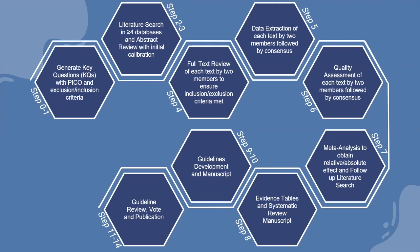Step seven involves a meta-analysis performed by the biostatistician to obtain the relative or absolute effect based on outcomes if possible, plus a follow-up literature search to ensure nothing has been missed. Step eight is producing and publishing the systematic review. Steps nine and ten involve developing the guidelines, after which the SAGES committee reviews, suggests edits, and votes on approval.